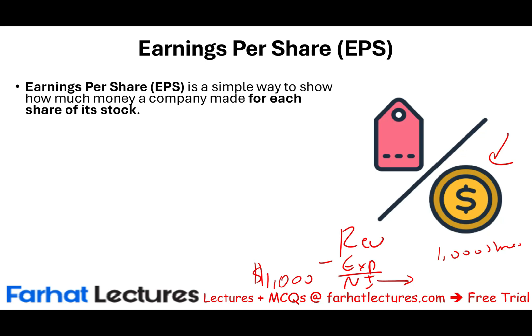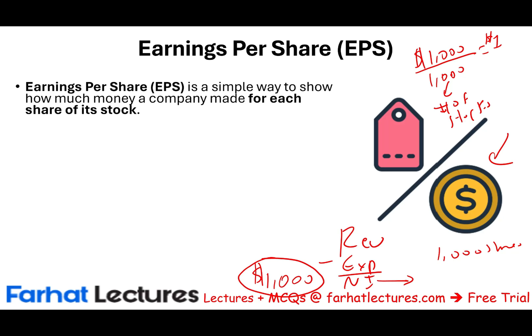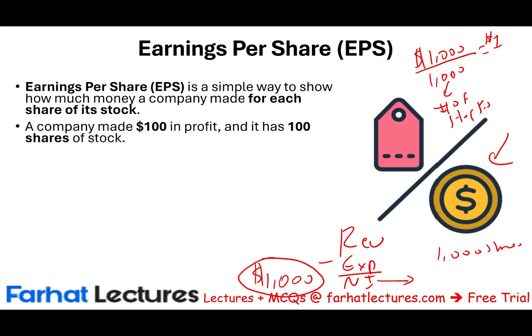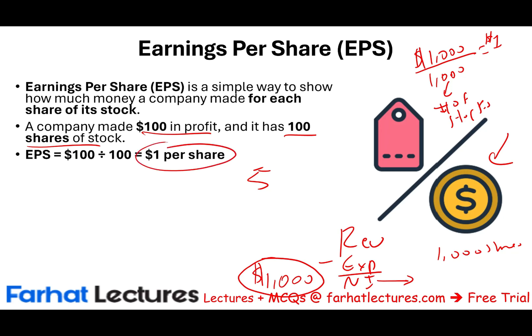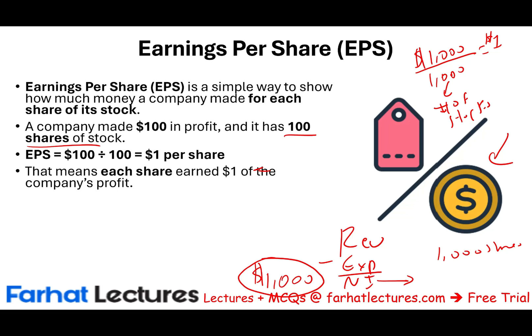To compute earnings per share more precisely, you take the profit that belongs to common shareholders and divide by the number of shares. If a company makes $100 in profit and has 1,000 shares, and you own 5 shares, your earnings per share is $1 — meaning each share earned $1 of the company's profit. This doesn't mean you'll receive that dollar unless dividends are distributed.